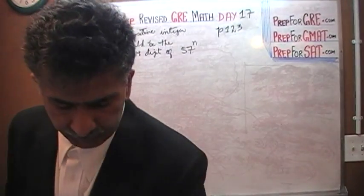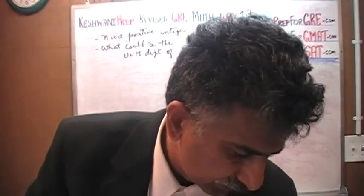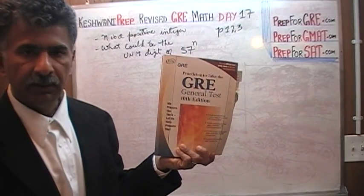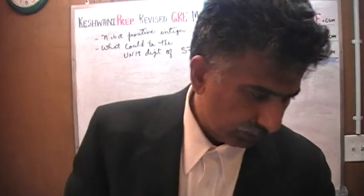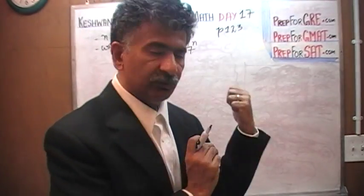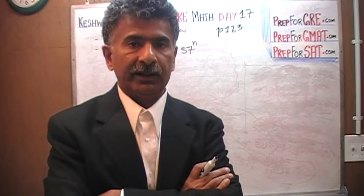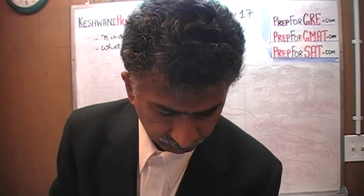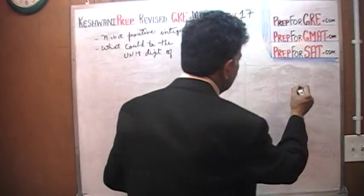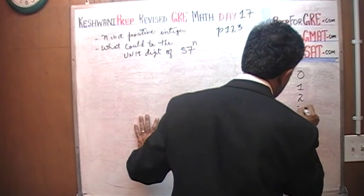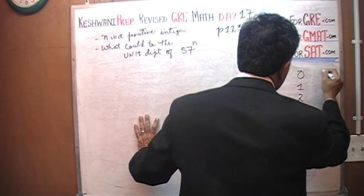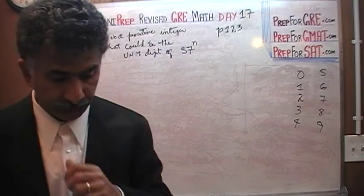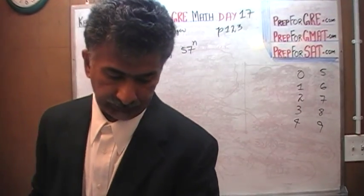This is a strange kind of problem. This sort of problem did not exist in the old GRE, the 10th edition. In the new GRE, one type of question they have introduced is where there are more than one right answer choices, and your job is to click on all the right answer choices. Here they give you 10 choices: 0, 1, 2, 3, 4, 5, 6, 7, 8, and 9. Your job is to click on all the choices that are correct.